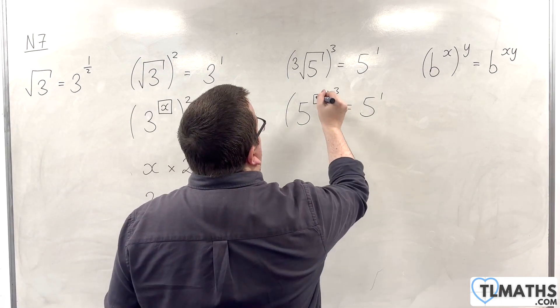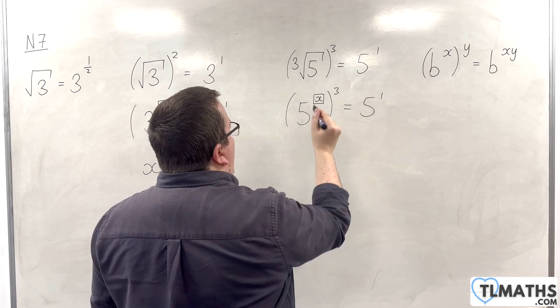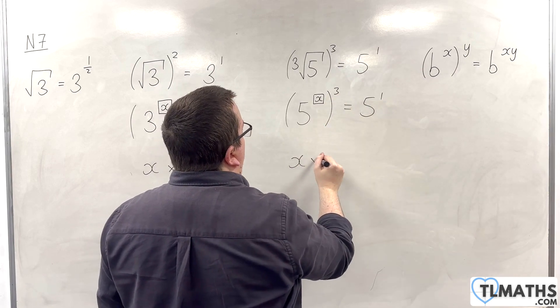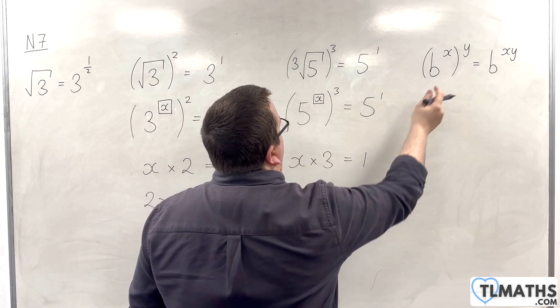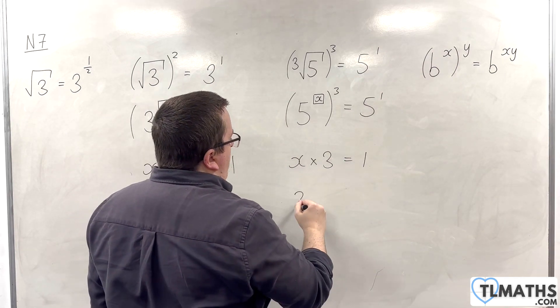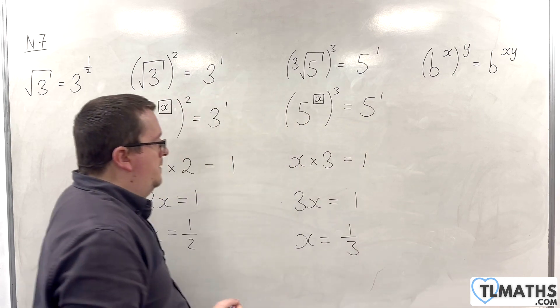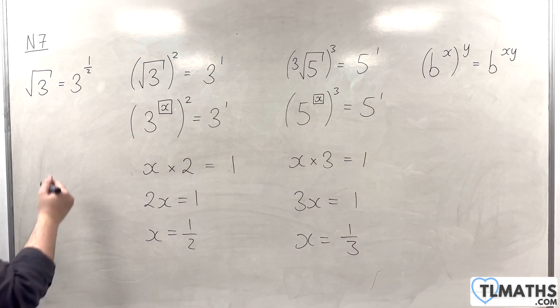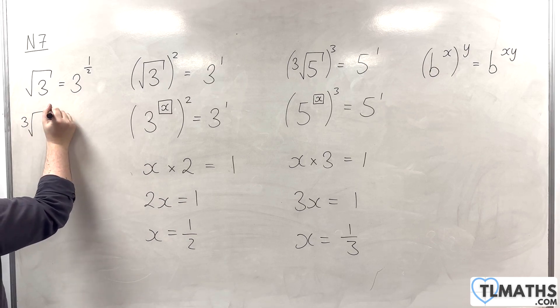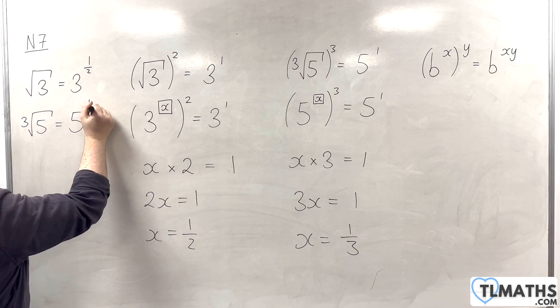So, if I call this value x, then I've got x times 3 must be equal to 1, using our rule here. So, 3x must be 1. So, in this case, x would have to be 1 third. So, the cube root of 5 has to be 5 to the power of 1 third.